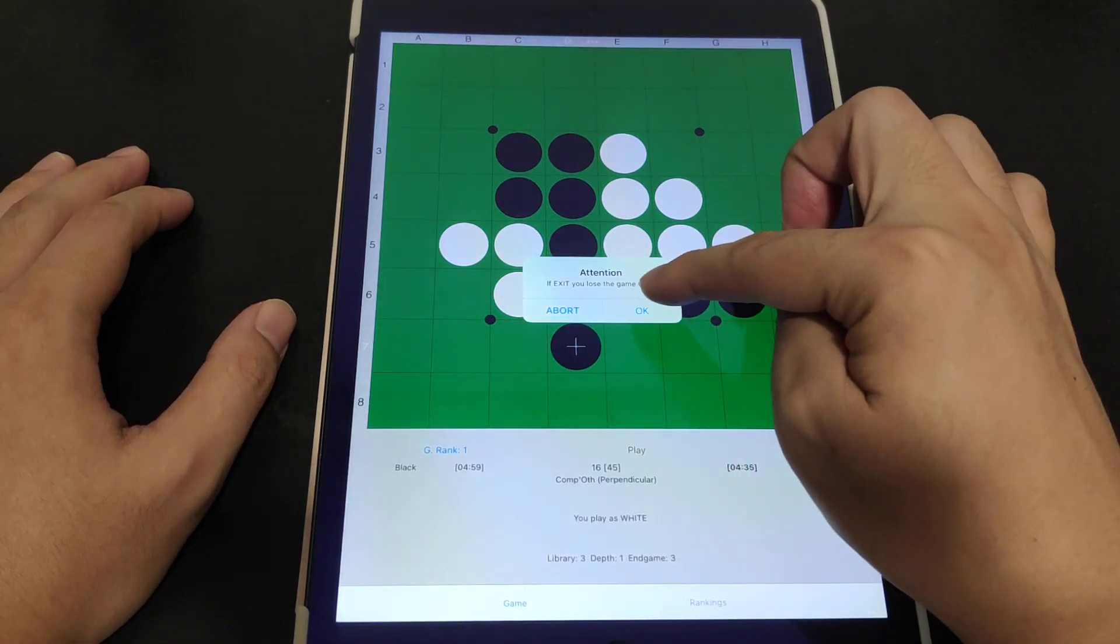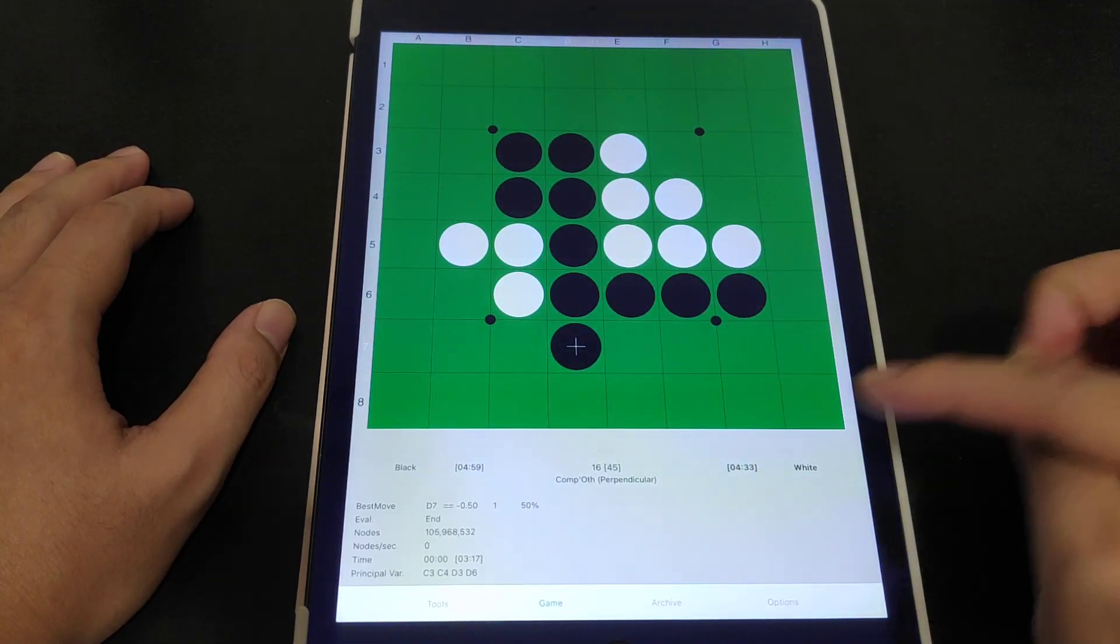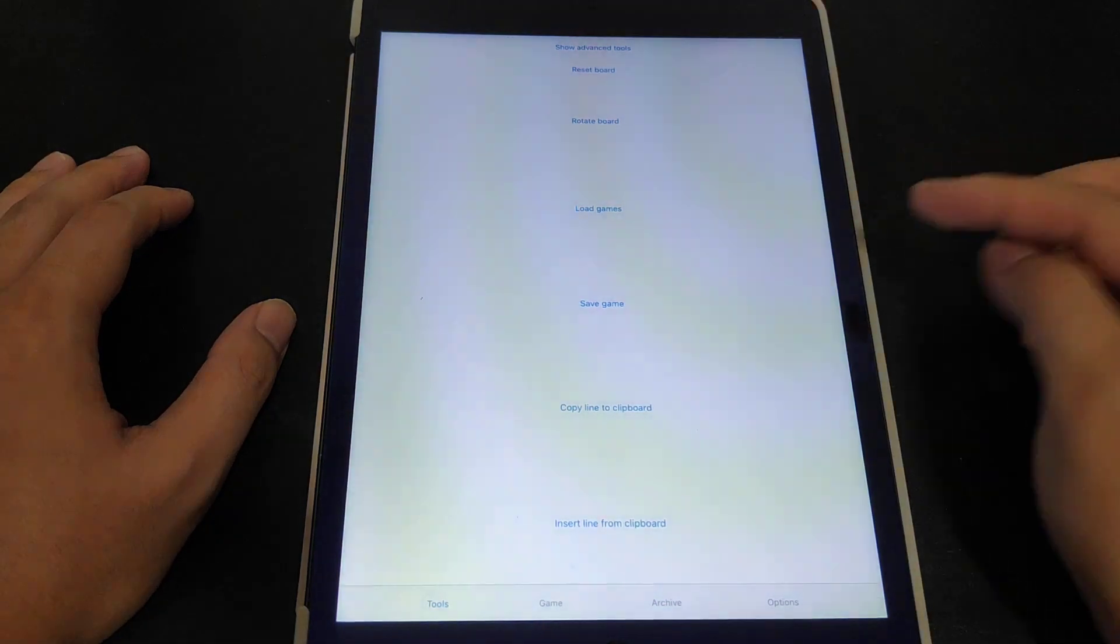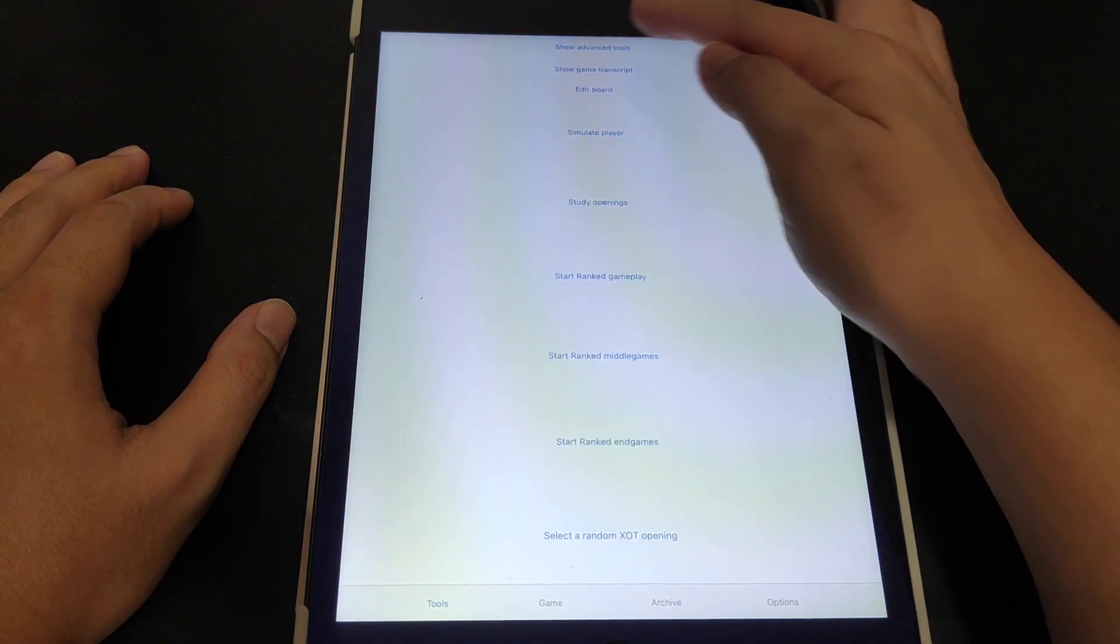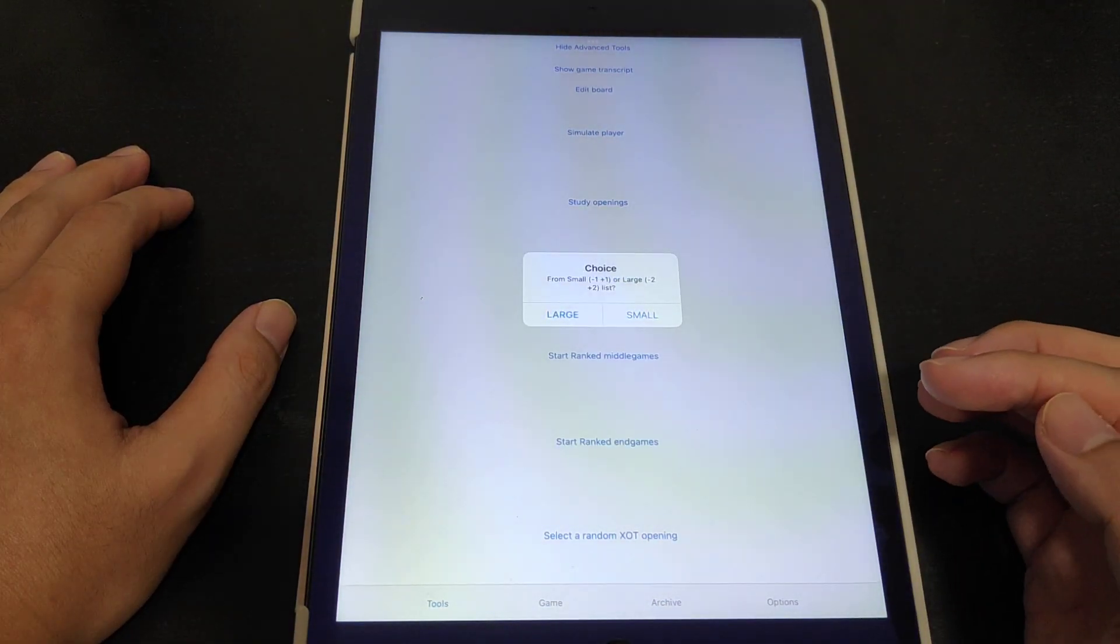And of course work through the ranking. So let me just exit this. Okay I'm going to lose the game 64-0 here. We'll go to tools again and we're going to show advanced tools.